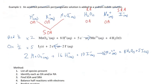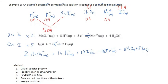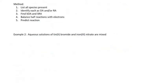To summarize the method: first, list all species present; second, identify each as an oxidizing or reducing agent (water, for example, can be both); third, find the strongest oxidizing and reducing agents; fourth, balance those half-reactions with respect to electrons; fifth, write them together as the predicted overall reaction. This five-step method is how we predict redox reactions.